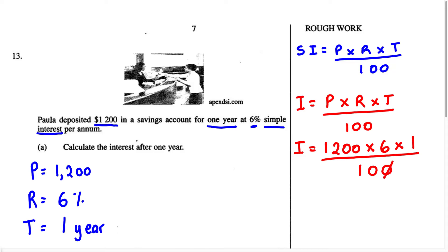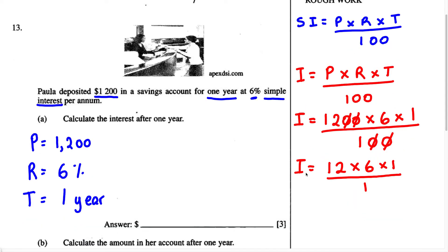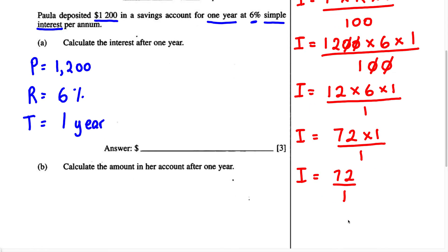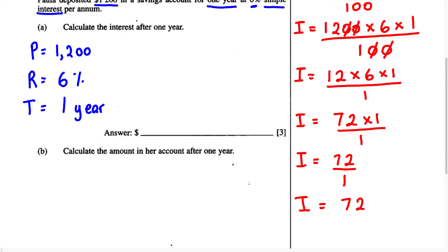Let's simplify. This zero can cancel out with this zero, and this zero can cancel out with this zero. Therefore, we're left with Interest equals 12 multiplied by 6 multiplied by 1, over 1. 12 times 6 gives us 72, and 72 times 1 is 72. Any number divided by 1 gives us that number, so the interest is $72. This is our answer for Part A.